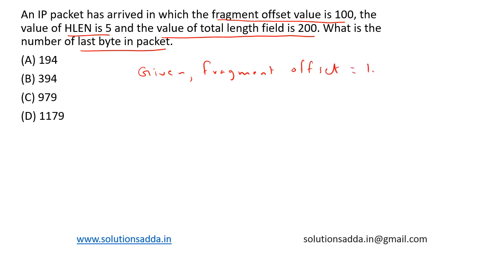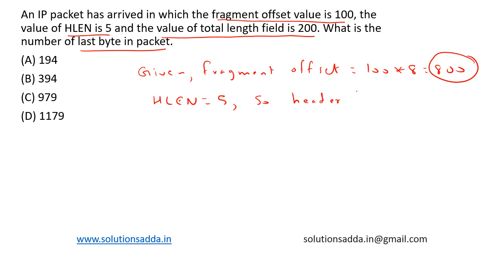The fragmentation offset is equal to 100, which has to be multiplied by 8, giving 800. The header length is equal to 5, so header length is 5 into 4, which is equal to 20 bytes. Total length is equal to 200.